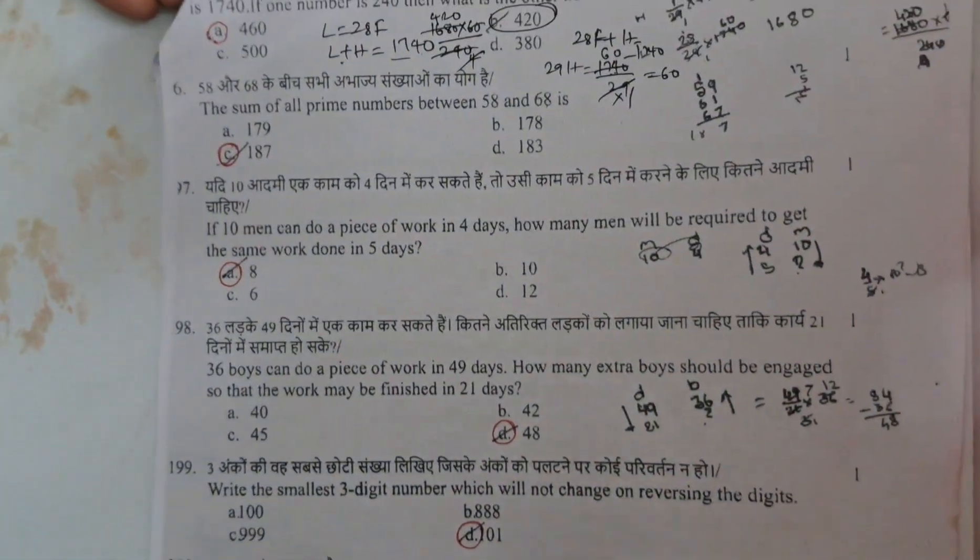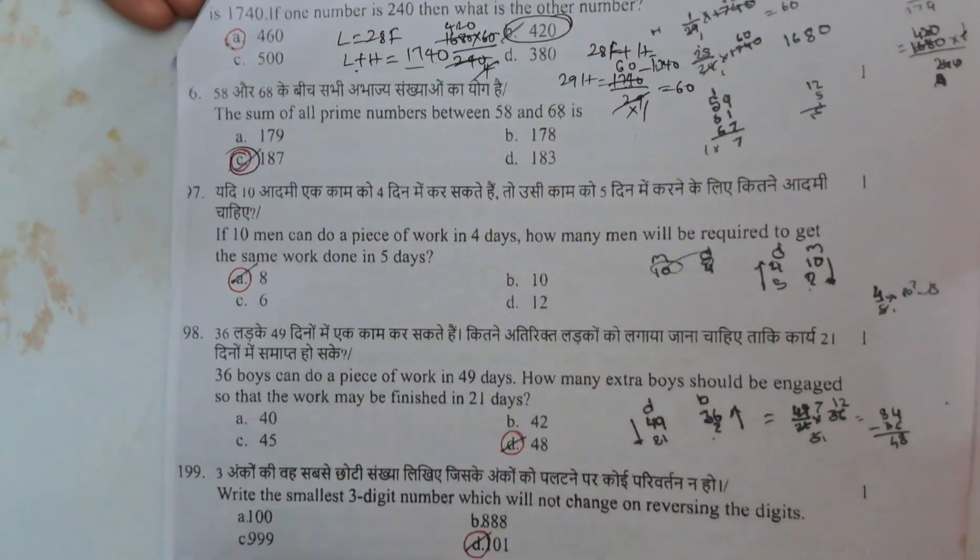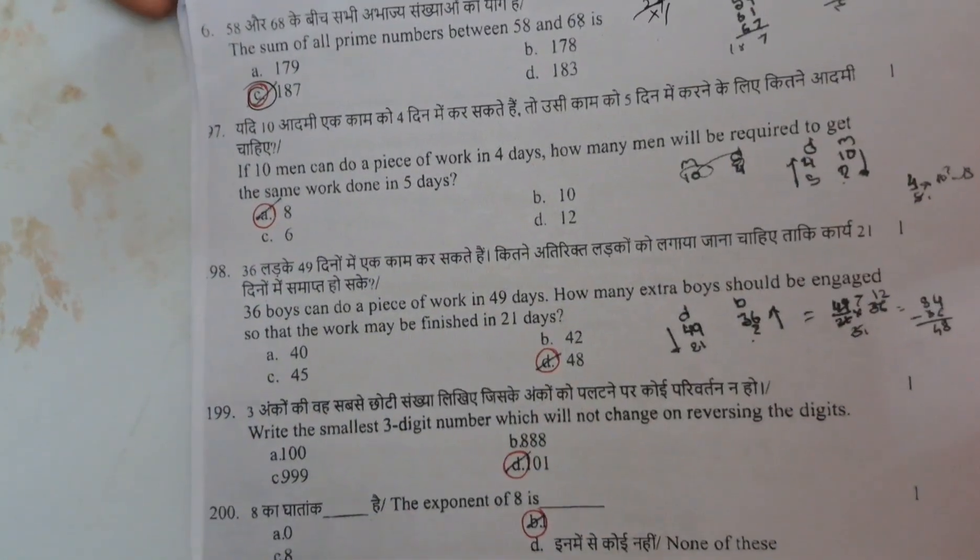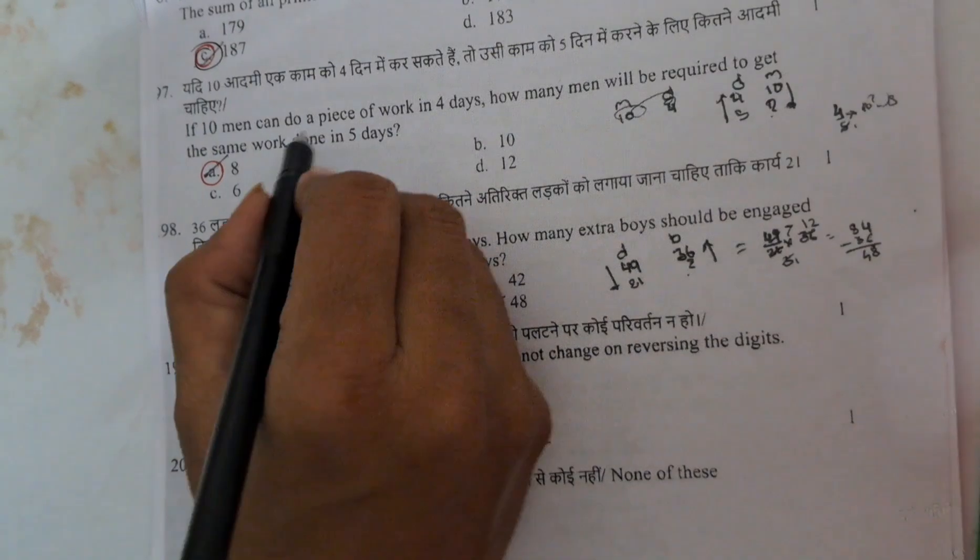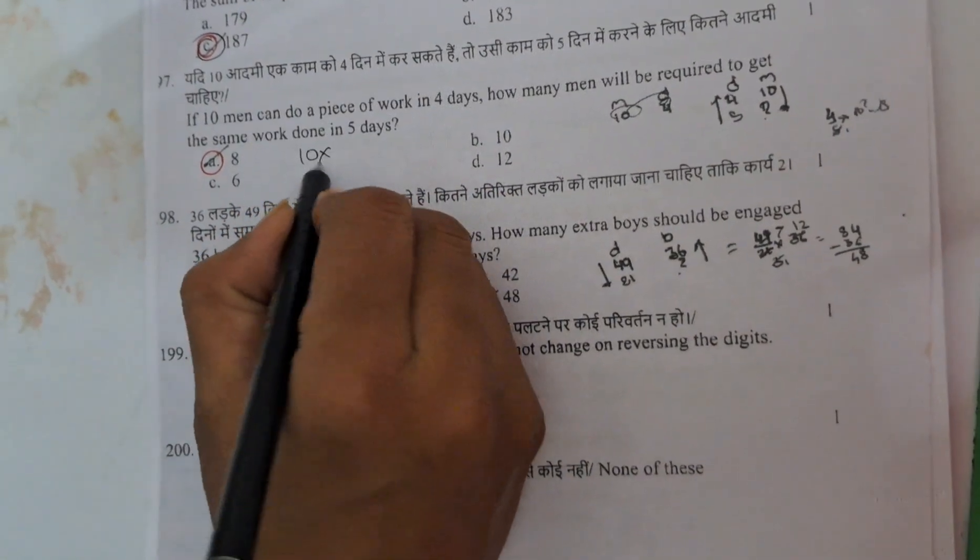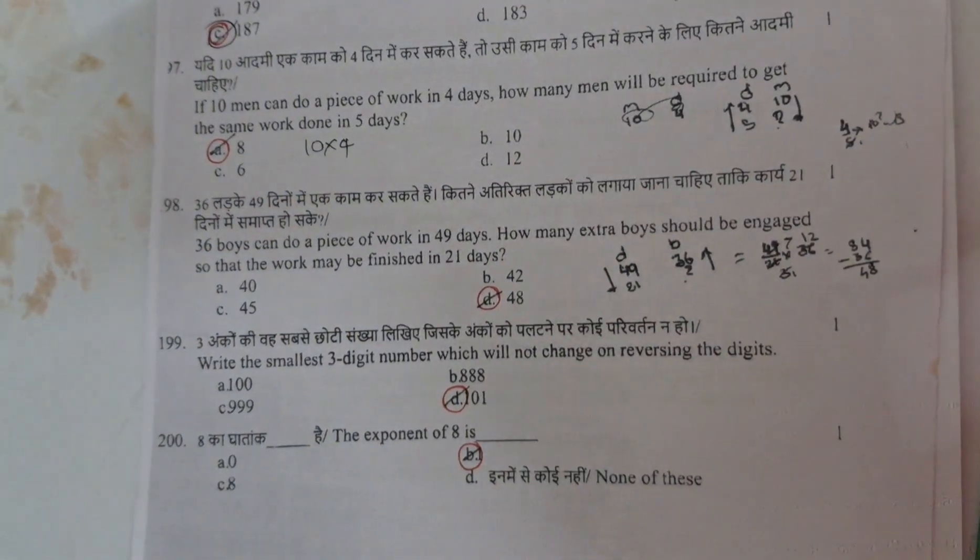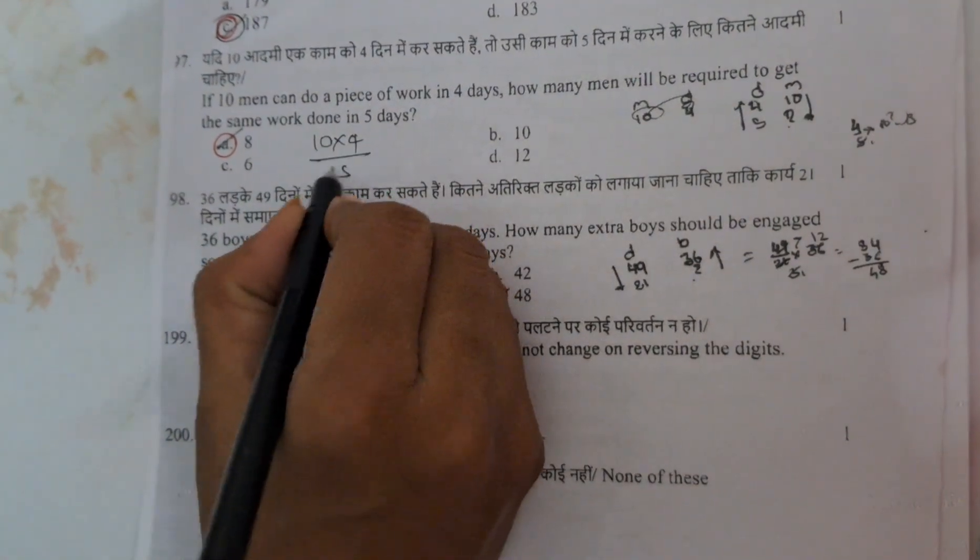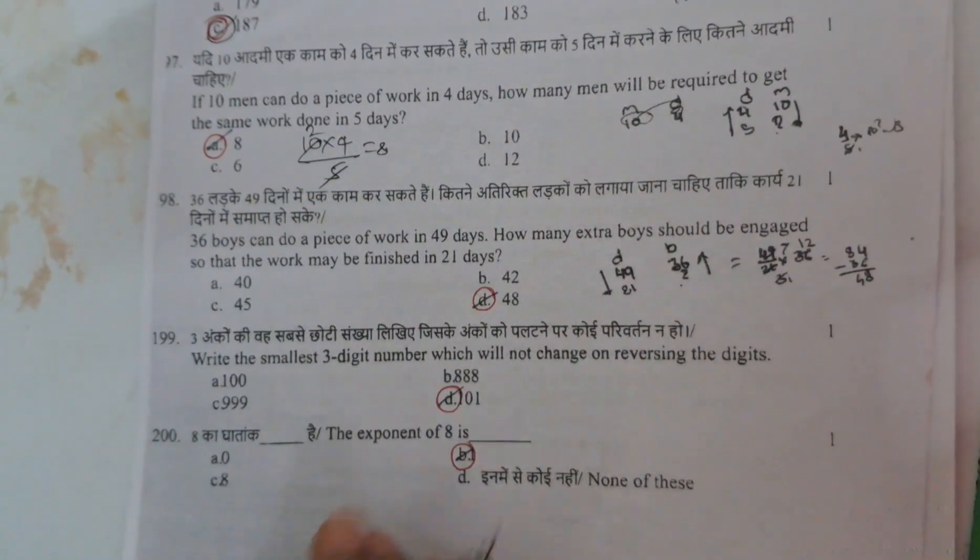And next sum of all prime numbers 58, 62. If you add, you will get 187. Here 10 men, 10 men can do a piece of work in 4 days. Means 10 into 4. And in every work, time and work, you need to take the right multiplication. Means it is 8 days.